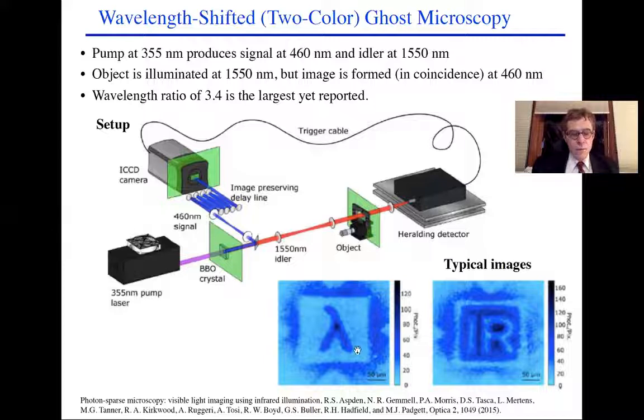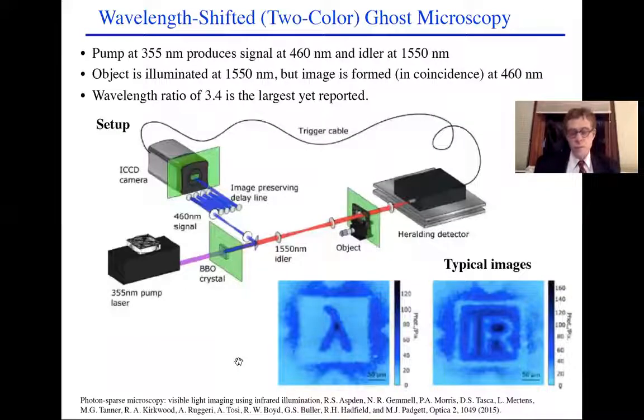And here are some typical images. The image-forming part was taken with a CCD camera, but it tells us what the object looked like at 1.55 microns, where a CCD camera cannot work.